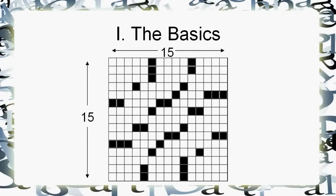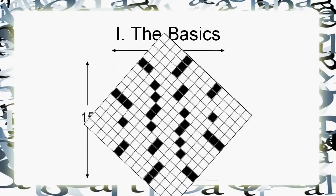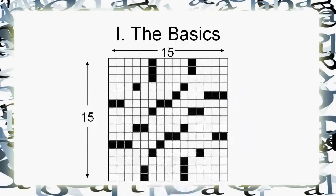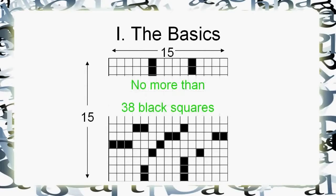You've got to have some black squares in there, and the black squares are going to look something like this. Generally in these puzzles, they're going to be symmetric, which means that if you took the grid and you just flipped it 180 degrees, the pattern of black squares stays the same. You can't have too many of them — try to keep it under 38. 40 is sometimes okay, but 38 is a good rule of thumb.